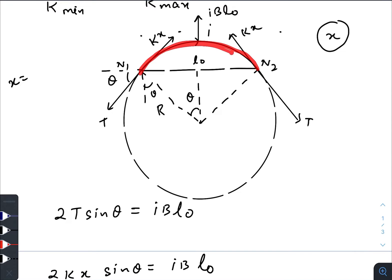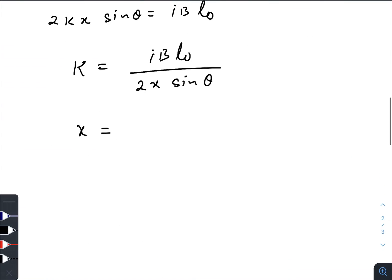So the length of the arc is 2Rθ minus the initial length was l₀, so minus l₀. Our final expression becomes k equal to IBl₀ divided by 2(2Rθ - l₀) times sin θ.